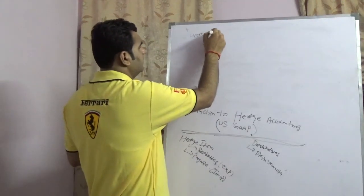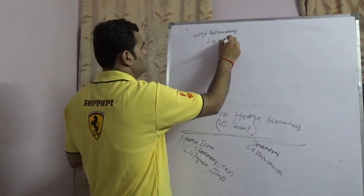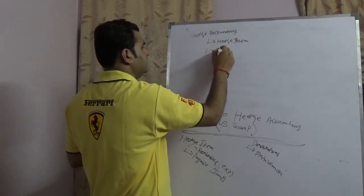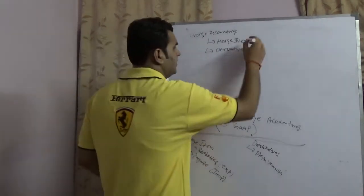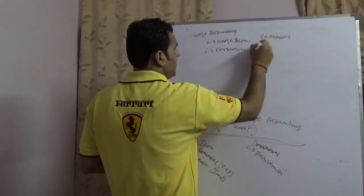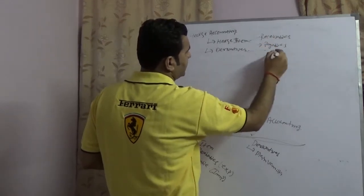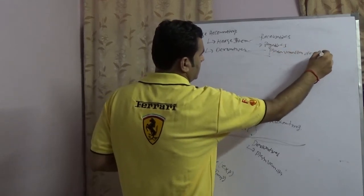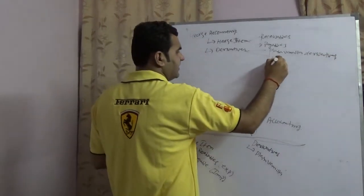The two important terms in hedge accounting are: one is known as the hedged item and one is known as the derivative. The hedged item can be further categorized into receivables and payables. Derivatives can be further categorized into plain linear derivatives and exotic derivatives.